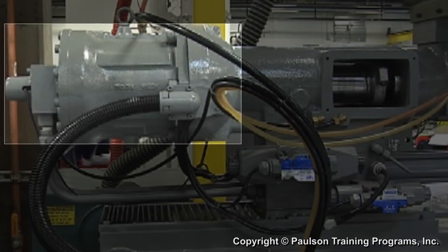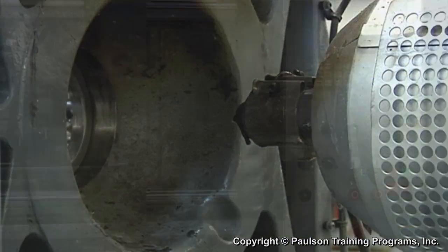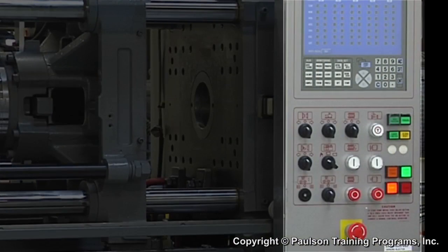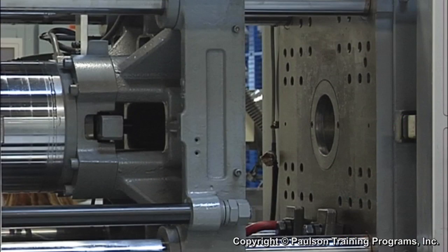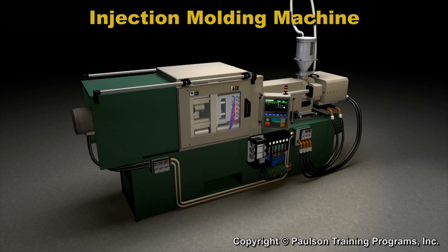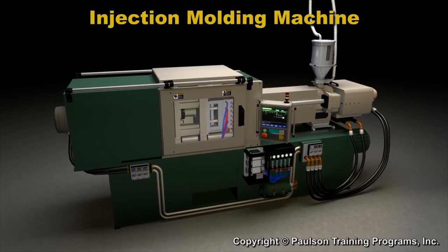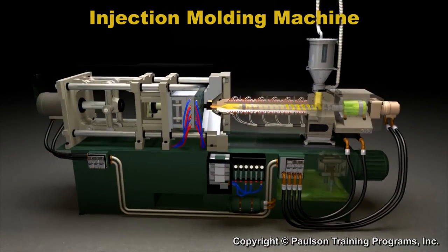The screw drive motor, the barrel, the nozzle area, and the control panel. The two platens which hold the mold and the clamp mechanism. To understand how an injection molding machine works, we'll use a 3D model.